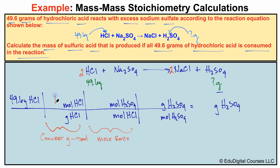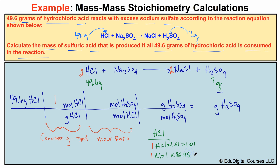What goes in the empty spaces? For the molar mass of HCl: hydrochloric acid is made up of one hydrogen and one chlorine. We take 1 × 1.01 (molar mass of hydrogen) plus 1 × 35.45 (molar mass of chlorine from the periodic table) and add them together to get 36.46 grams per mole. So one mole of HCl is 36.46 g/mol.